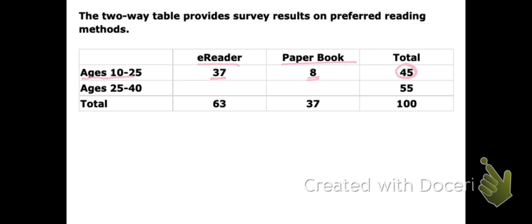Notice that 37 plus 8 equals 45. And that's the same in the next row — for ages 25 to 40, there are 55 people in that age group. This row breaks down those 55 people into the number that prefer e-readers and the number that prefer paper books. 26 plus 29 equals the 55 total.